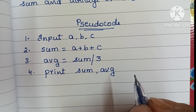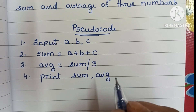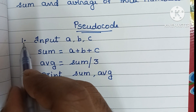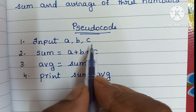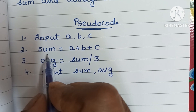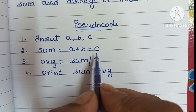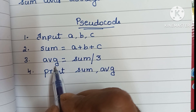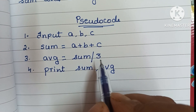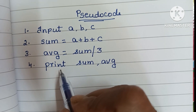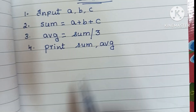So this is the pseudocode to find sum and average of three numbers. In step one, input three values a, b, c. Next, calculate sum as a plus b plus c. Next, find average as sum divided by 3. Finally, print sum and average.